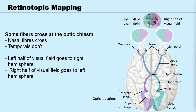As the optic nerves course down to the chiasm, there is a crossing over of some fibres. The fibres of the nasal region cross over. So the teal one from the left eye crosses over to the right side of the brain, and the purple one from the right eye crosses over to the left side of the brain. So now we have all of the left visual field on the right side of the brain and all of the right visual field on the left side of the brain.